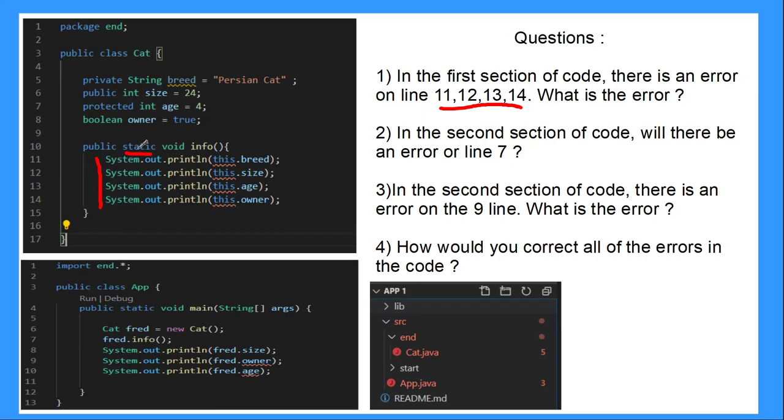So the reason why these are red is because this static method is able to be called before an instance is created from this class. So it's linking up to these, but these haven't been created. The class properties have not been created. So this is the reason why it's the error. It's because the method is static and it's linking up to those class properties.